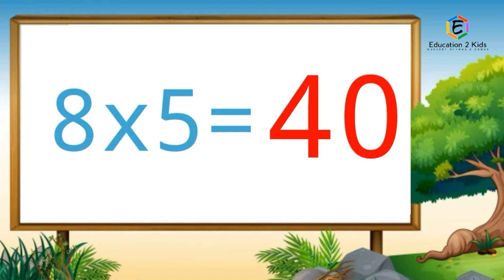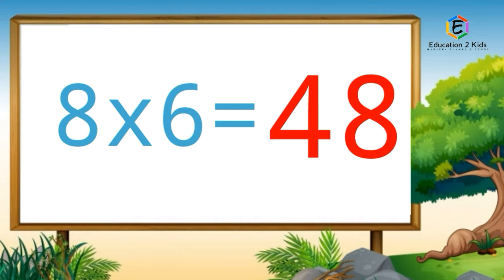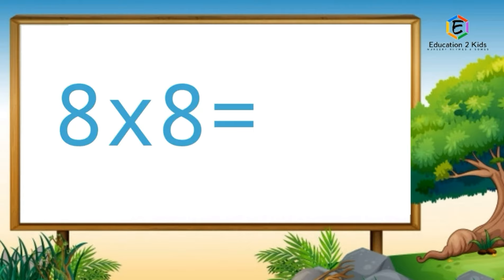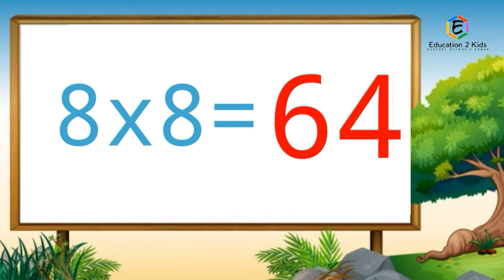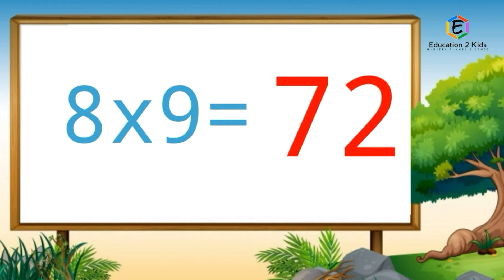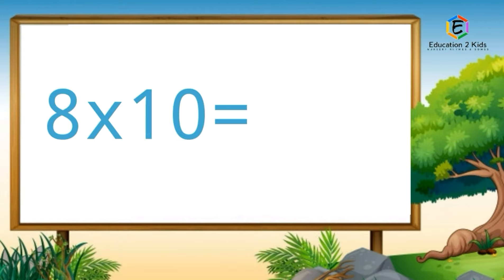8 fives are 40, 8 sixes are 48, 8 sevens are 56, 8 eights are 64, 8 nines are 72, 8 tens are 80.